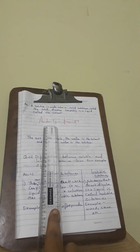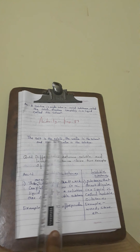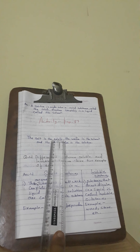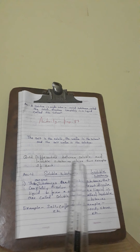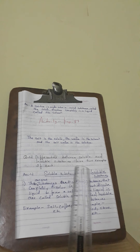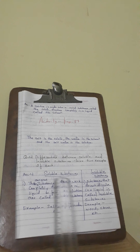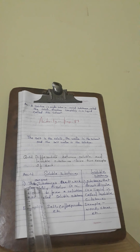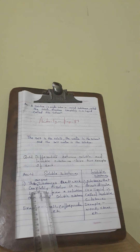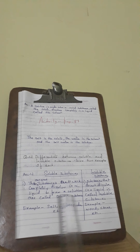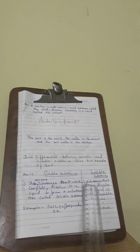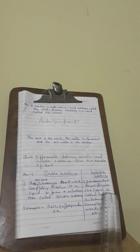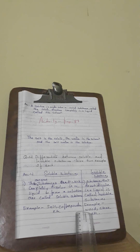Write the activity from page 87 and then write that line after the activity. Coming to question number four: differentiate between soluble and insoluble substance and give two examples of each. Soluble substance: substances which completely dissolve in a liquid to form a solution are called soluble substances — for example, salt and coffee powder.